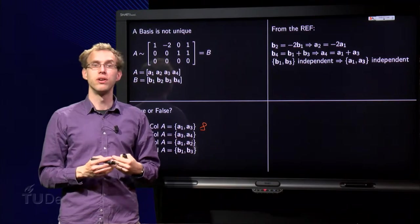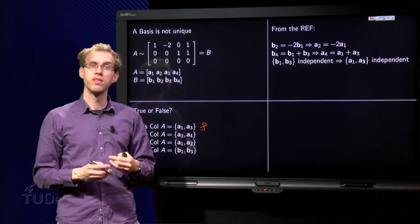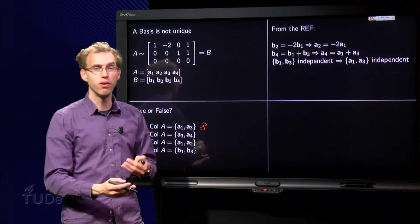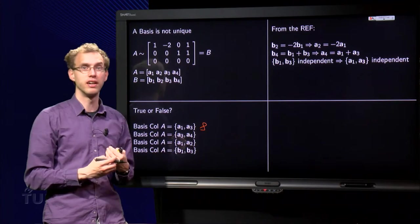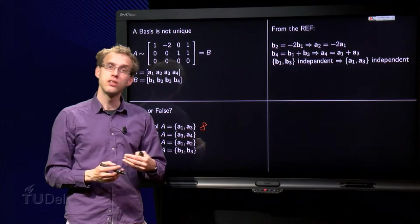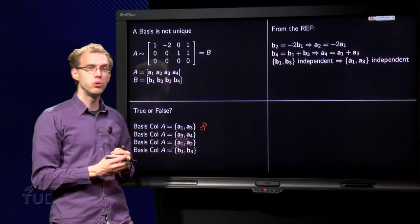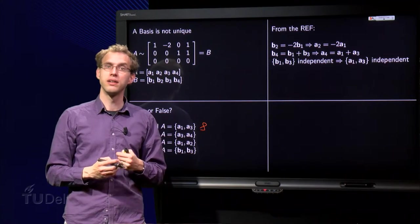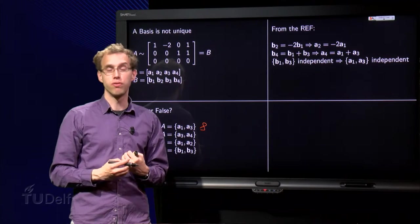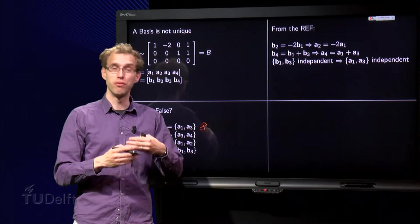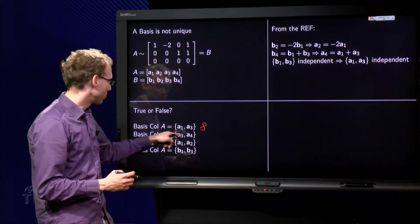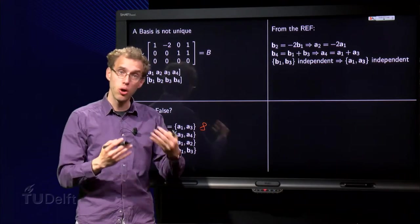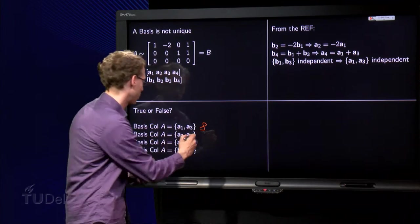So that means that B3 and B4 are independent, so that means that A3 and A4 are independent. So now we have two independent vectors in col A. The basis for col A consists of two independent vectors, as we saw already here. So the set consisting of A3 and A4 is also a basis for col A. So that's okay.